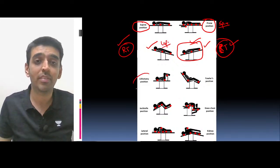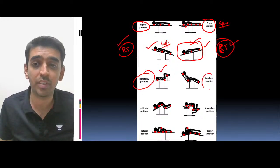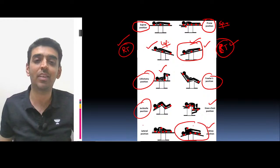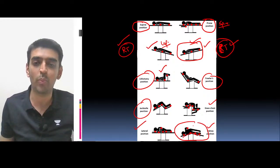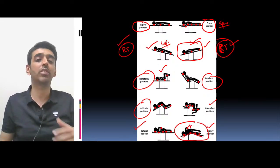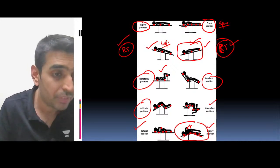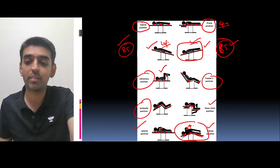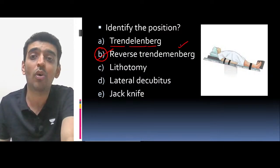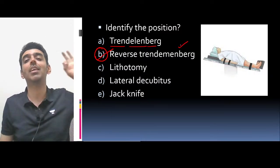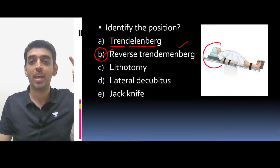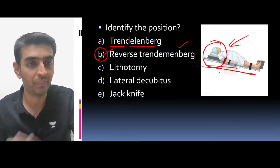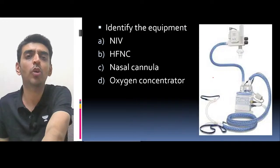This is the lithotomy position. This is the jackknife position. The knee-chest position and kidney position are variations of the lateral position where a wedge is used to elevate the kidney area. The correct answer for this first image-based question is Reverse Trendelenburg position — head is above. If the head is below, it is Trendelenburg position.